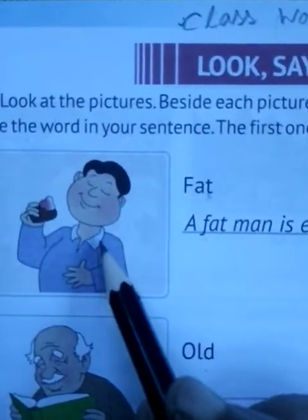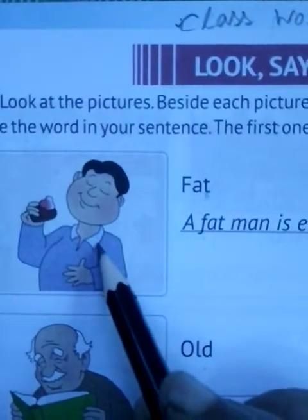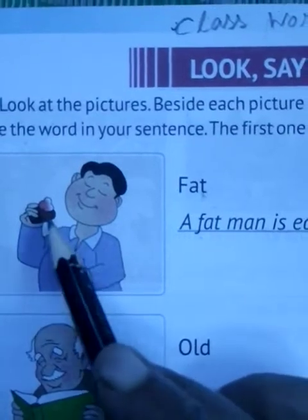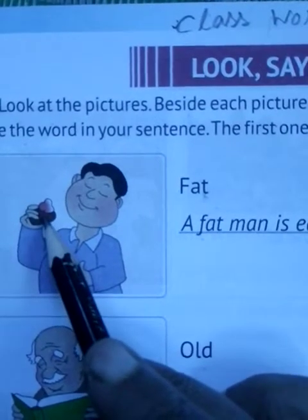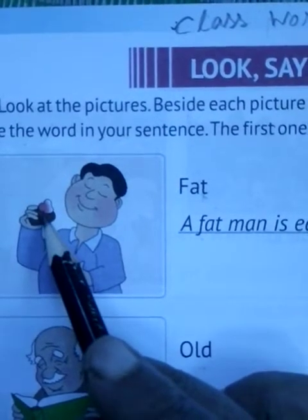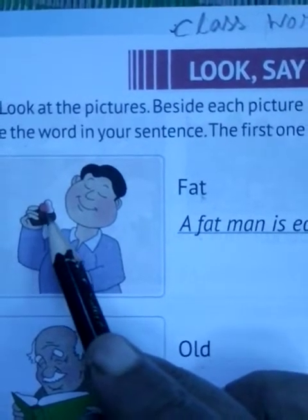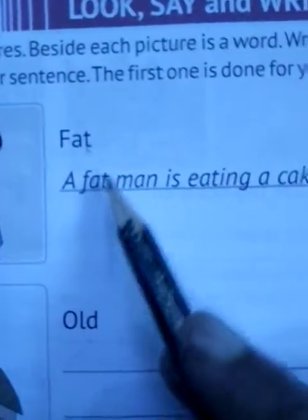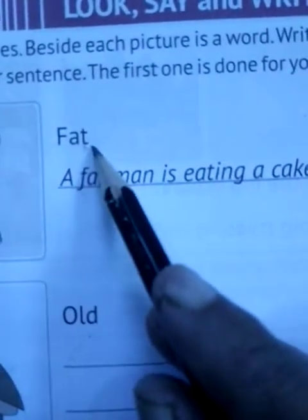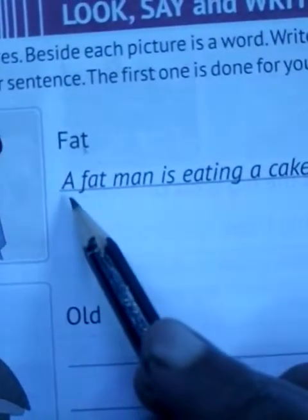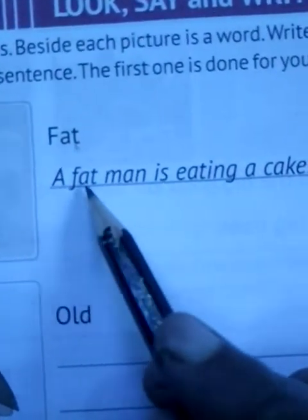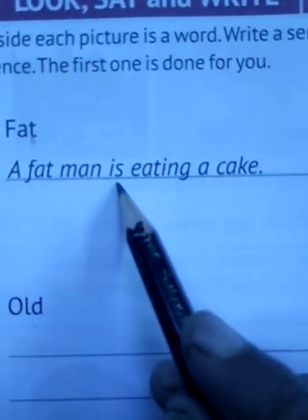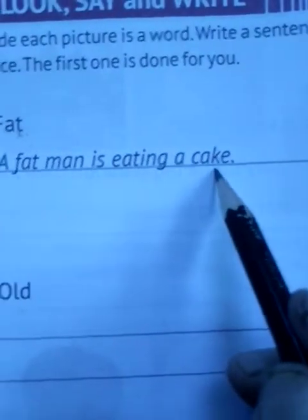Fat. A fat man. So what is he doing? See — he is eating a cake. So here written, see: fat is the word, and written: a fat man is eating a cake.